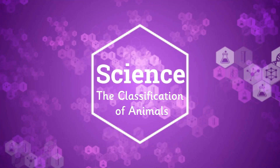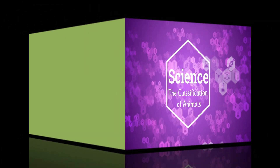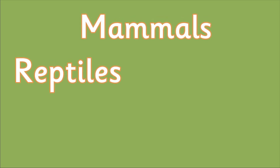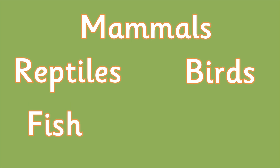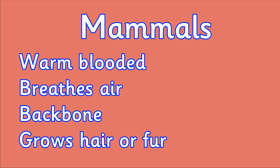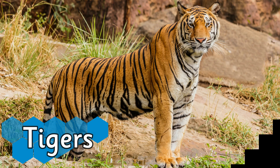Science: the classification of animals. Let's learn about animal groups. We are going to be looking at mammals, reptiles, birds, fish, and amphibians. First, let's look at mammals. A mammal is an animal that is warm-blooded, breathes air, has a backbone, and grows hair or fur at some point during its life.